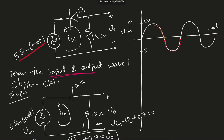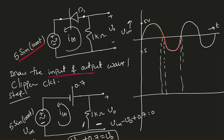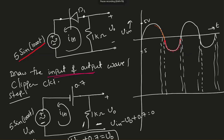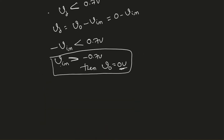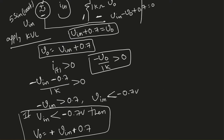Now I'm going to draw the output waveform — make sure to draw one under another. Mark negative 0.7 volts and 0 volts with dotted lines showing exactly where our input is. We can see that up to negative 0.7 volts, my output is going to be 0. So as long as V_in is greater than negative 0.7 volts, the output equals 0.